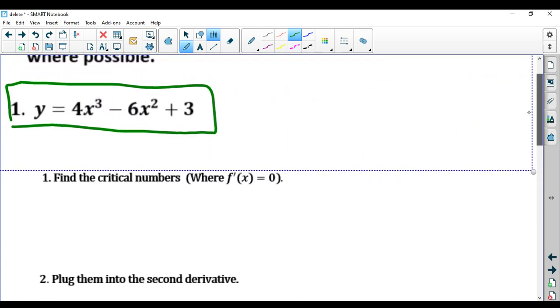First, you have to find the critical numbers, and that's where the derivative equals zero. So obviously, we're going to take the derivative, which is 12x² - 12x.